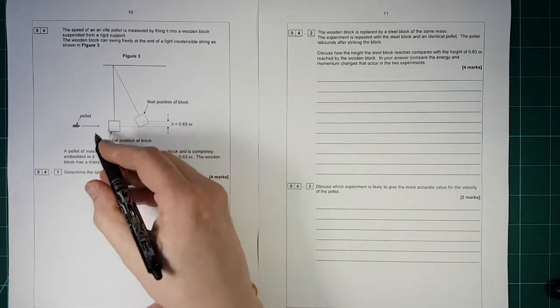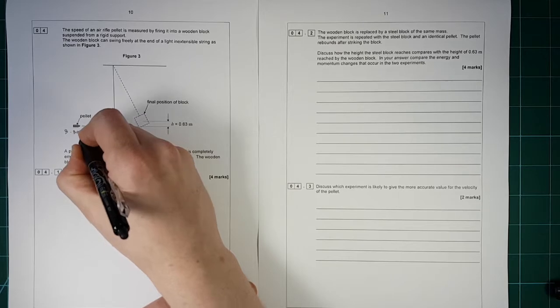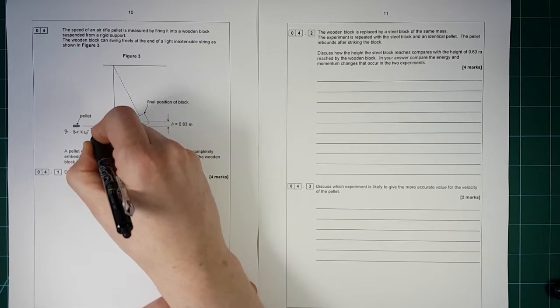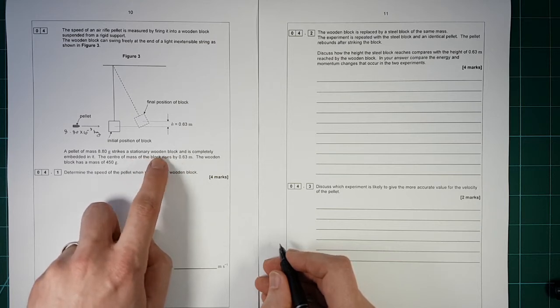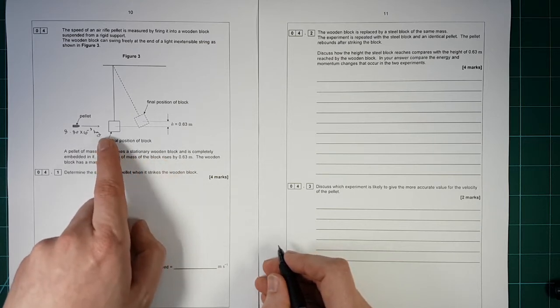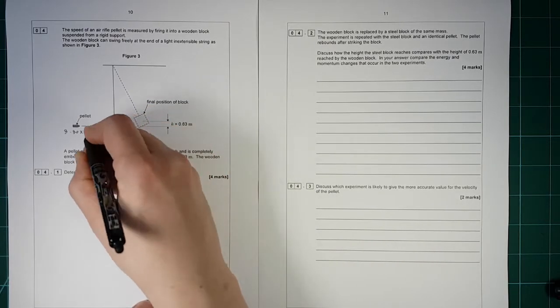The pellet has a mass of 8.8 grams, so that's 8.8 times 10 to the minus 3 kilograms, and strikes the stationary wooden block. It's completely embedded in it. So when it comes to here, there's the pellet.